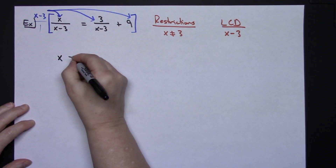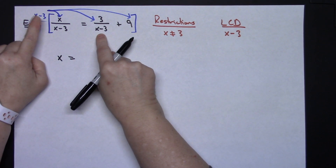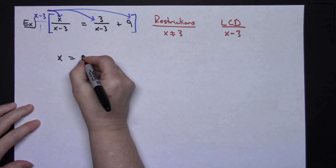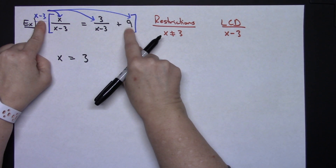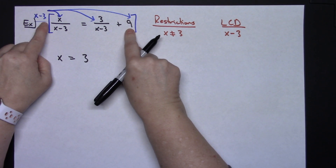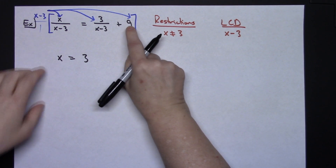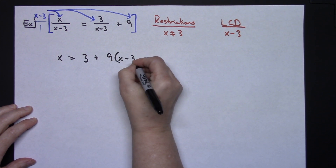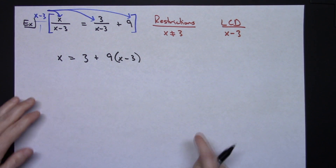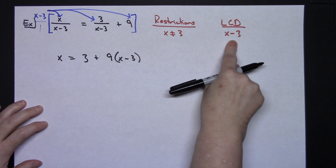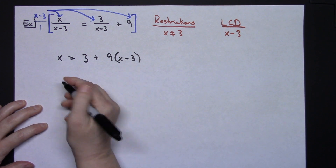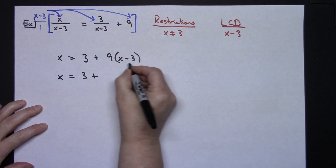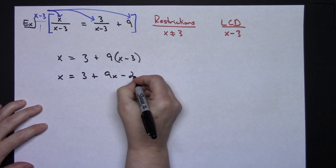x minus 3 divided by x minus 3 again gives 1 times 3, which stays a 3. The last term is not a fraction, so I multiply x minus 3 by 9. I need to remember x minus 3 is a binomial, so I have 9 times the binomial x minus 3. After multiplying through by the least common denominator, all fractions are gone: x equals 3 plus 9x minus 27.